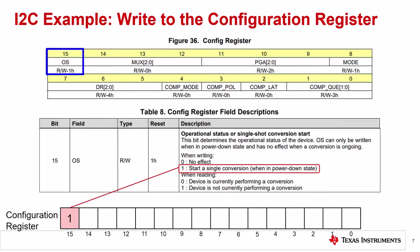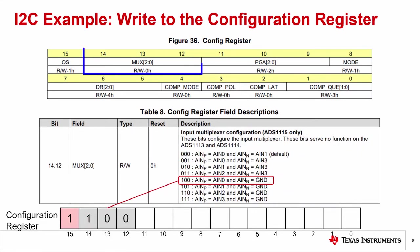Starting with the most significant bit, bit 15 is the single shot conversion start bit. Setting bit 15 to 1 will start a single conversion. Bits 14 to 12 set the multiplexer setting of the device. For this example, we'll set the device to do a single-ended measurement from AIN0 with respect to ground. Using table 8, we would set AINP to AIN0 and AINN to GND. To do this, set bits 14 to 12 to be 100 in binary.